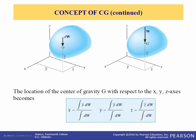Therefore, we can solve for x-bar, y-bar, and z-bar from those previous equations and get the location of the center of gravity with respect to the x, y, and z axes, as you can see here. This will become clearer when I start doing some examples, and I'm going to show you a technique that will make solving these problems very easy.